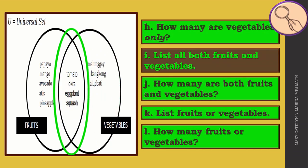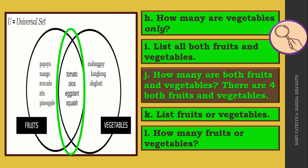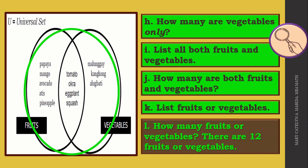What about the list of both fruits and vegetables? That would be tomato, okra, eggplant, and squash. How many are both fruits and vegetables? There are four both fruits and vegetables. Now list fruits or vegetables. That would be everything in the universal set which are papaya, mango, avocado, atis, pineapple, tomato, okra, eggplant, squash, malunggay, kangkong, and alugbati. Now, how many fruits or vegetables? There are twelve fruits or vegetables.